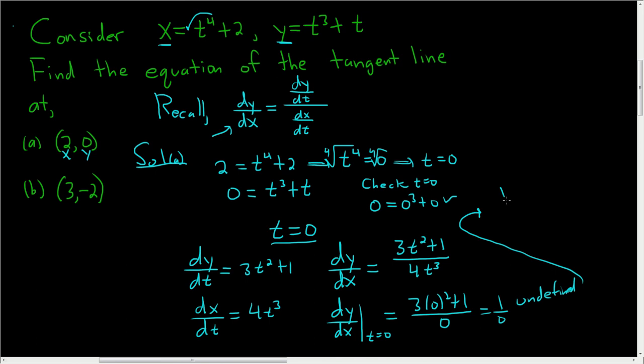And so we have a vertical tangent line, kind of sneaky. And it passes through the point 2 comma 0, so it must be x equals 2. So that's the solution to part A.